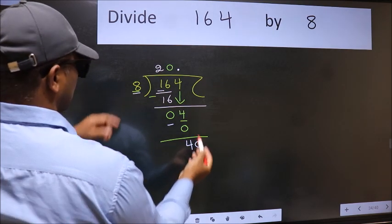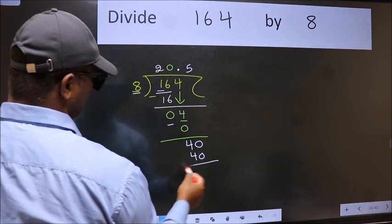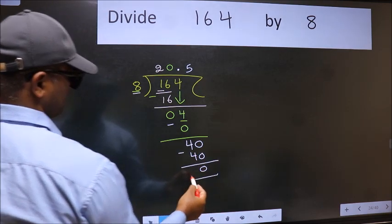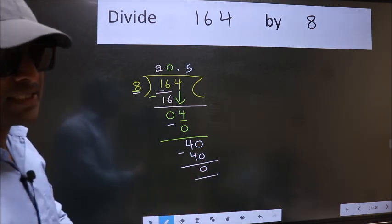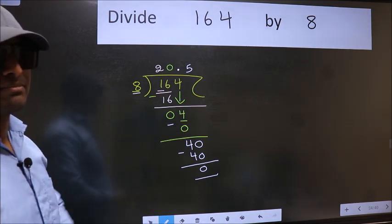When do we get 40 in the 8 table? 8 times 5 is 40. Now we subtract and get 0. Did you understand where the mistake happens? You should not do that mistake.